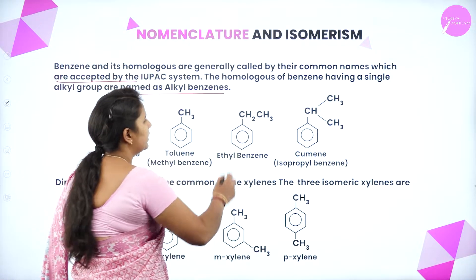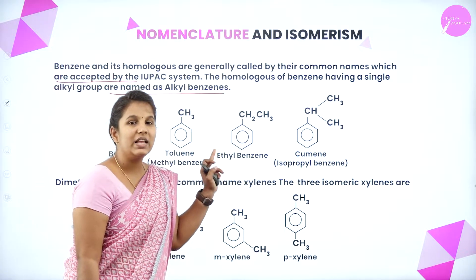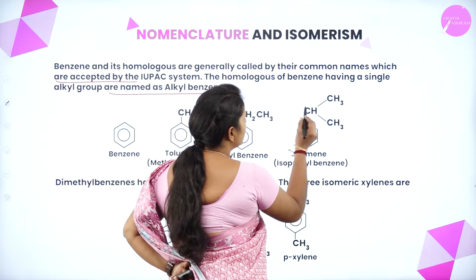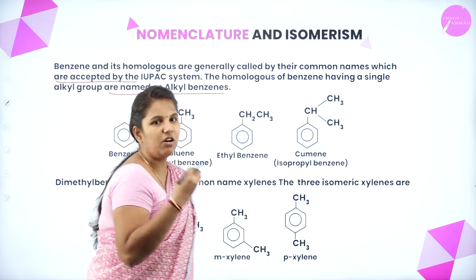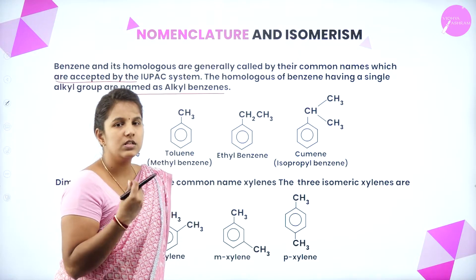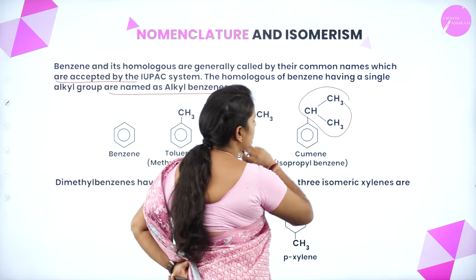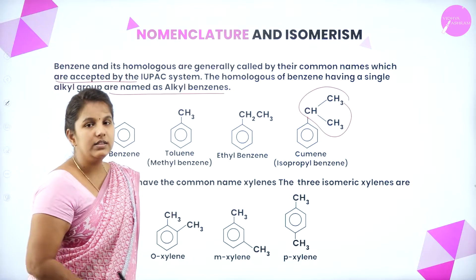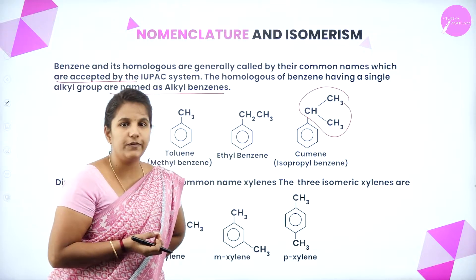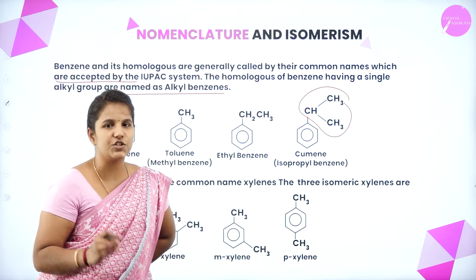If there are two carbon atoms and five hydrogen atoms in the attached group, it is ethyl benzene. If the carbon atom has another two methyl groups attached — that is an isopropyl group — it is named first, giving isopropyl benzene. This is how we name aromatic compounds: any alkyl group attached to the benzene ring is named first, followed by benzene.